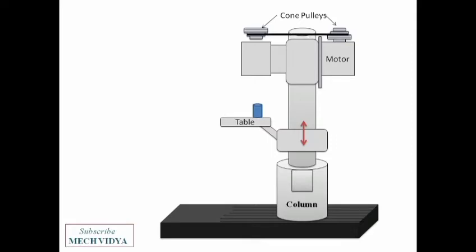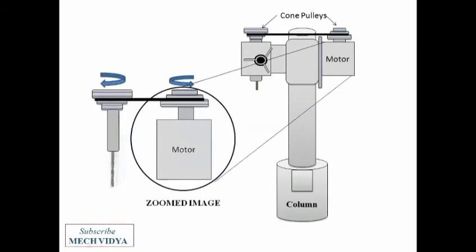What happens here is that when the motor shaft rotates, the first pulley on the motor rotates along with it. Now this motion is transmitted to the second pulley by the V-belt. Now connected to the second pulley is our drill spindle.